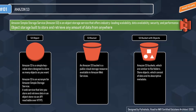The second concept is S3 Buckets. An Amazon S3 bucket is a public cloud storage resource available in Amazon Web Services. As the name suggests, a bucket is used for storage. The third concept is S3 Bucket with Objects — a bucket is used for storage and you store objects within your S3 bucket. If you recall using computers, you create directories or folders in your drives and store files. Storing objects in S3 is similar, but the biggest difference is that you don't have a nested folder structure — you cannot create folders within folders.